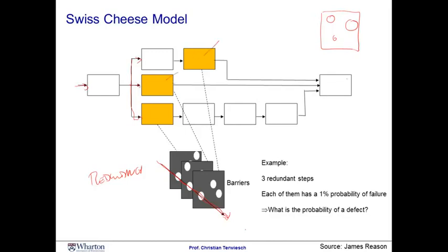Now, the orange boxes here are the redundant test points. What's the probability if each of them makes a defect with a 1% likelihood? Well, the likelihood of us making a defect at the very end is simply 0.01 raised to the power of 3. If every one of them catches the defect, the redundancy kicks in and the defect is detected.